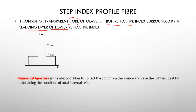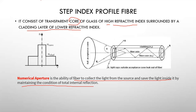Numerical aperture is the ability of the fiber to collect light from the source and keep the light inside it by maintaining the condition of total internal reflection. The signal entering the fiber is collected by maintaining total internal reflection. A higher numerical aperture means a higher ability to collect the information.